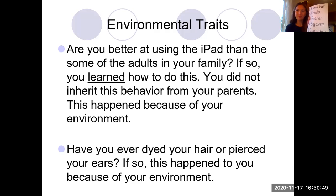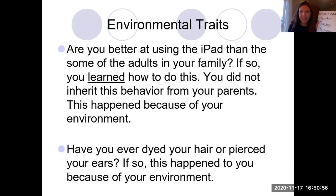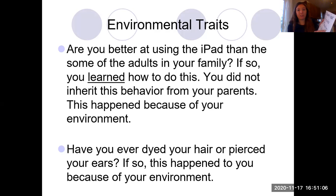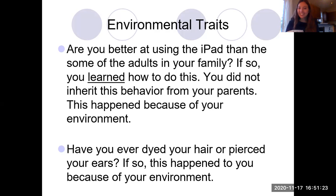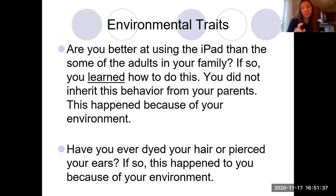So if I look back at my list: brown hair — I was born this way, this is inherited. Reader — was I born knowing how to read? No way. I had to work really hard to learn how to read. That's an environmental trait. Teacher — was I born knowing how to be a teacher? No way. I had to go to college for this, and I had to learn and practice a lot. Big eyes — that definitely was something I was born with; I inherited that from my dad. Curly hair — here's the tricky one. Some people are born with curly hair, but here's a secret: I wasn't born with curly hair. My hair is actually really straight. Every morning I curl my hair, so that is environmental because I change it in my environment.